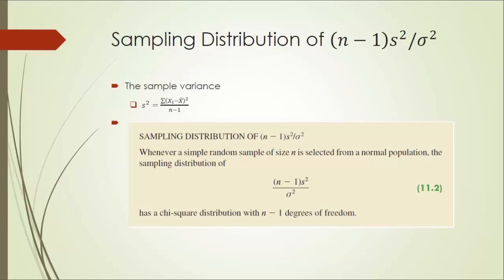First of all, let's look at the sampling distribution of n minus 1 times s squared divided by sigma squared. In this case, s squared is nothing but the sample variance, and sigma squared is the variance of the population.